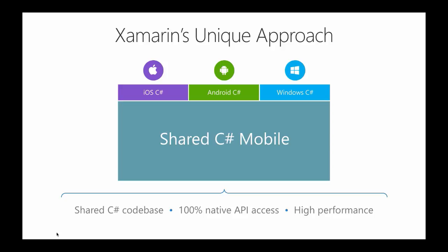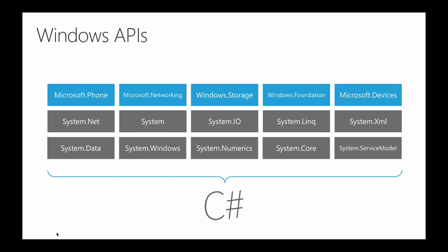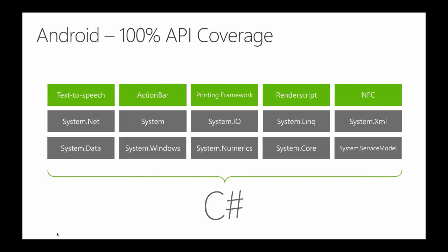Up top are the bits and pieces for iOS, Android, and Windows where you're building and accessing those native APIs. If you're a Windows developer, you have all those .NET libraries — things like System.Net, IO, LINQ, XML. On another platform, you download an SDK and get going. When you go to iOS or Android, it's exactly the same — you have that .NET base with Mono and Xamarin, and then iOS-specific APIs like iBeacon, Core Graphics, Core Motion, and Android-specific ones like text-to-speech, Action Bar, and printing framework. You can almost think of the entire .NET framework and Mono runtime as a big plugin for Xamarin.